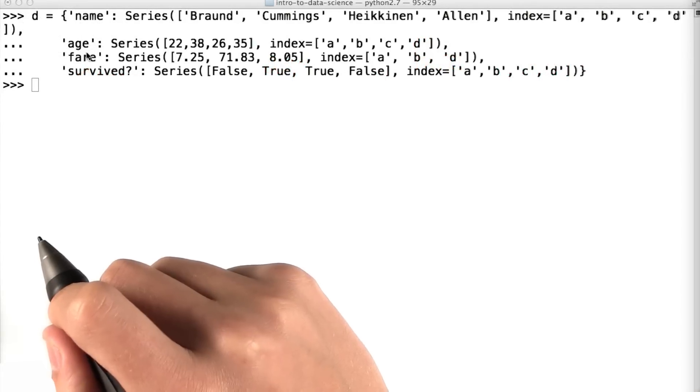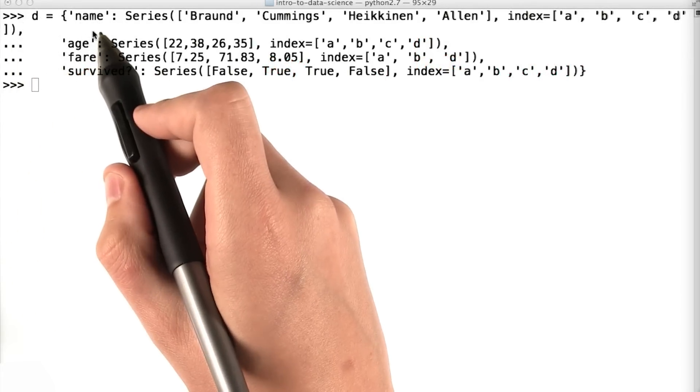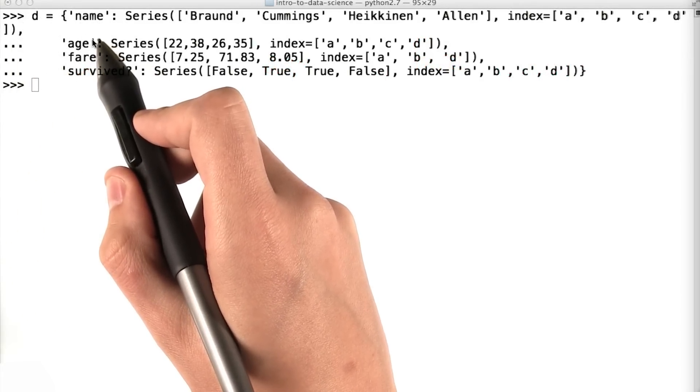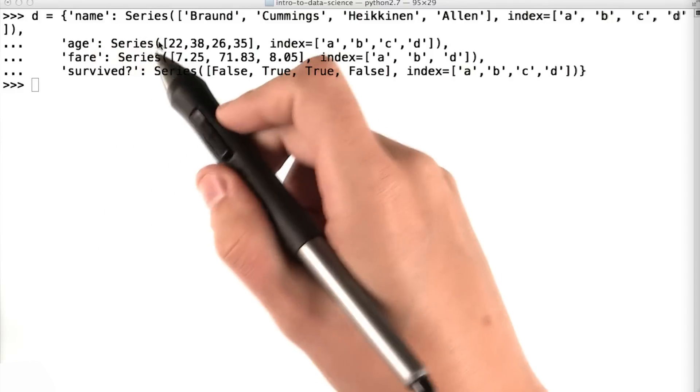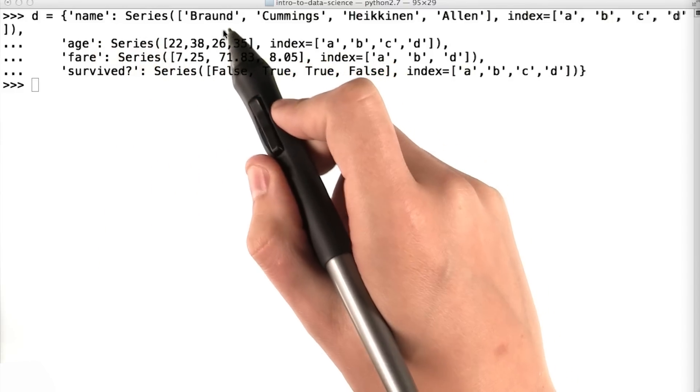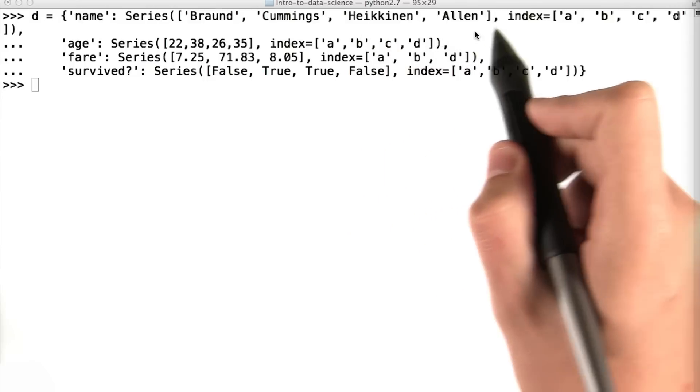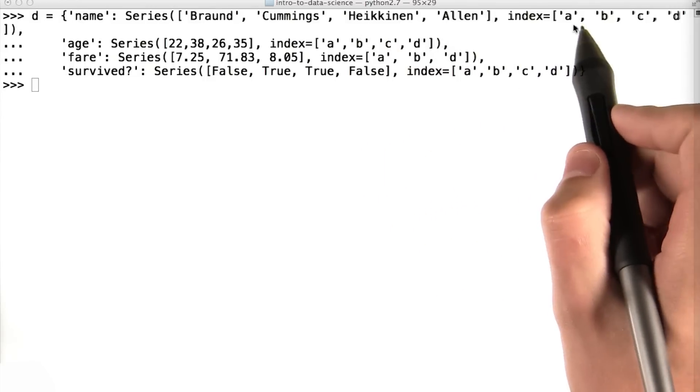First, I'll create a Python dictionary called d, where each key is the name of one of my columns. And the corresponding value is a Python series, where I first pass in an array with the values for the actual data frame, and then an array of indexes where I want those values to go.